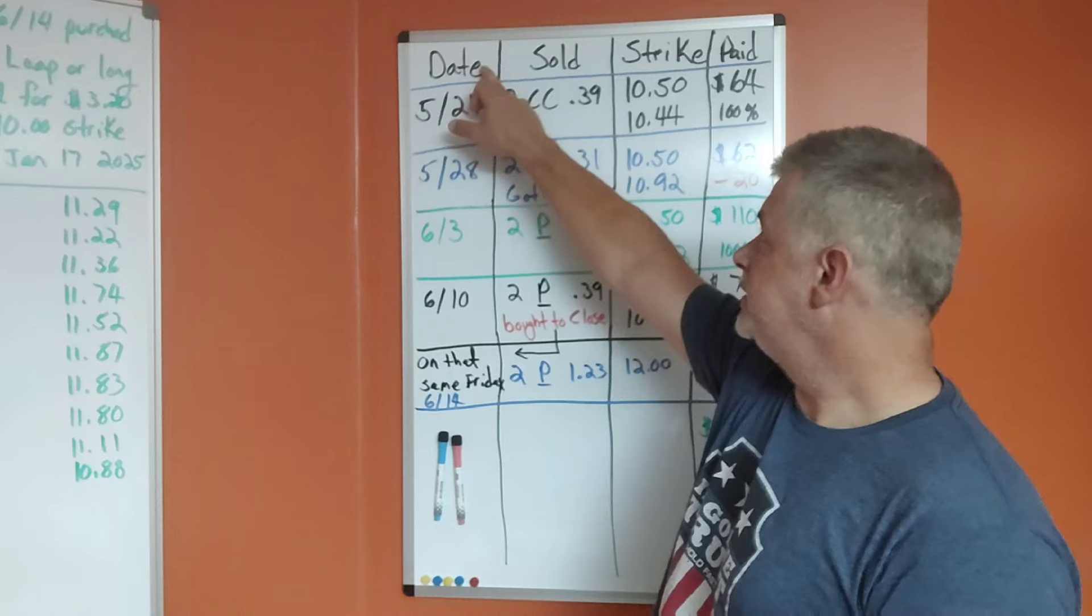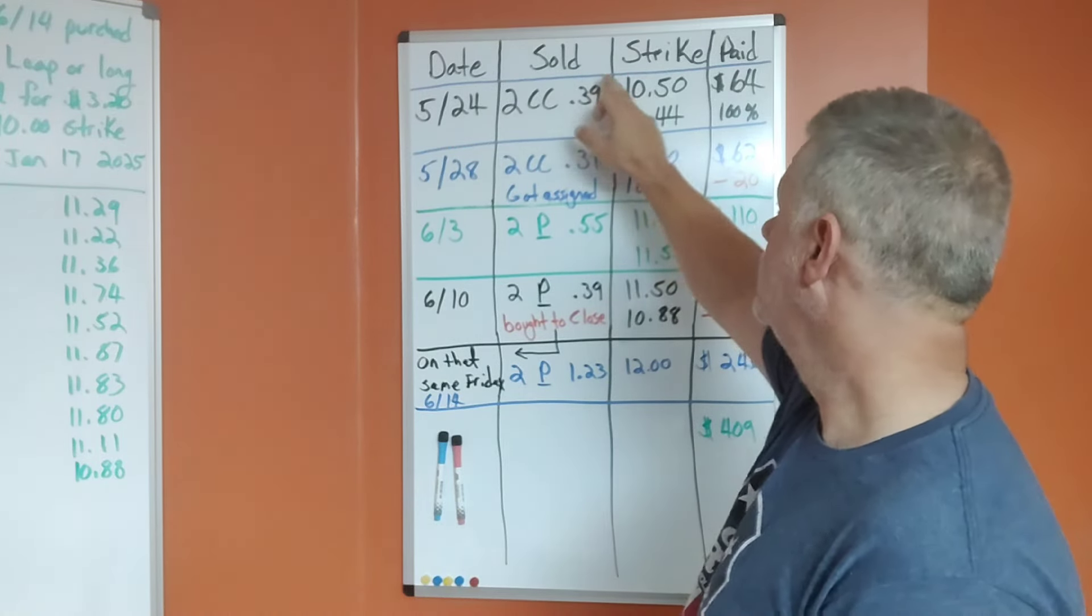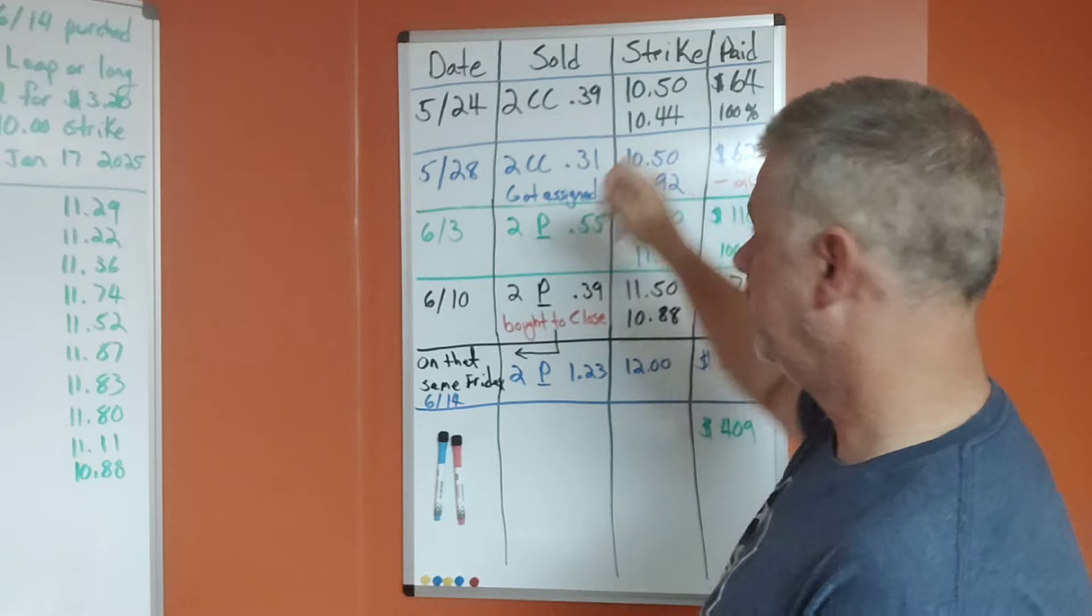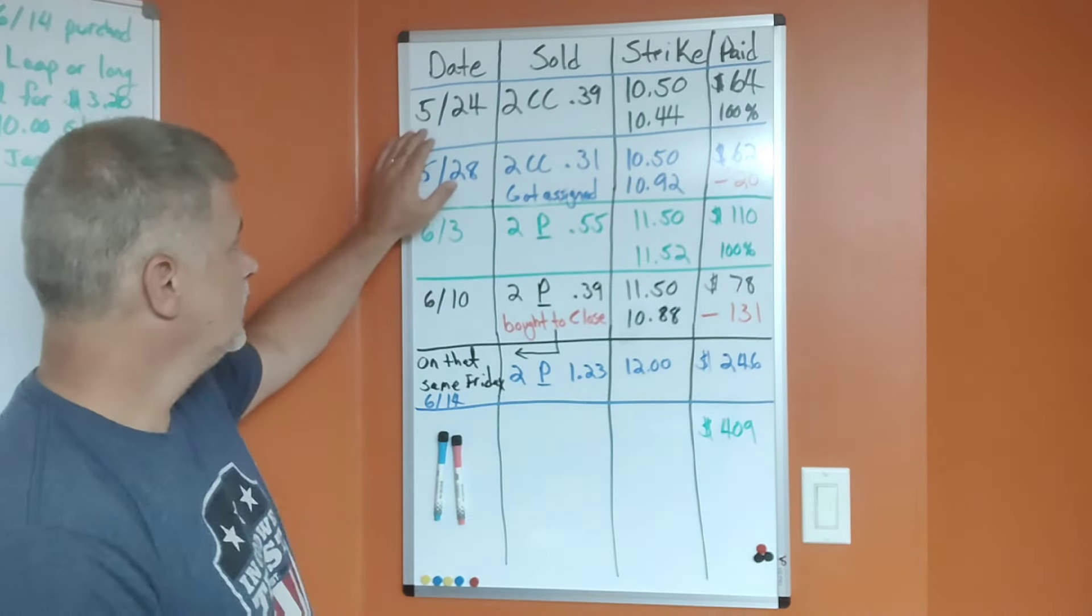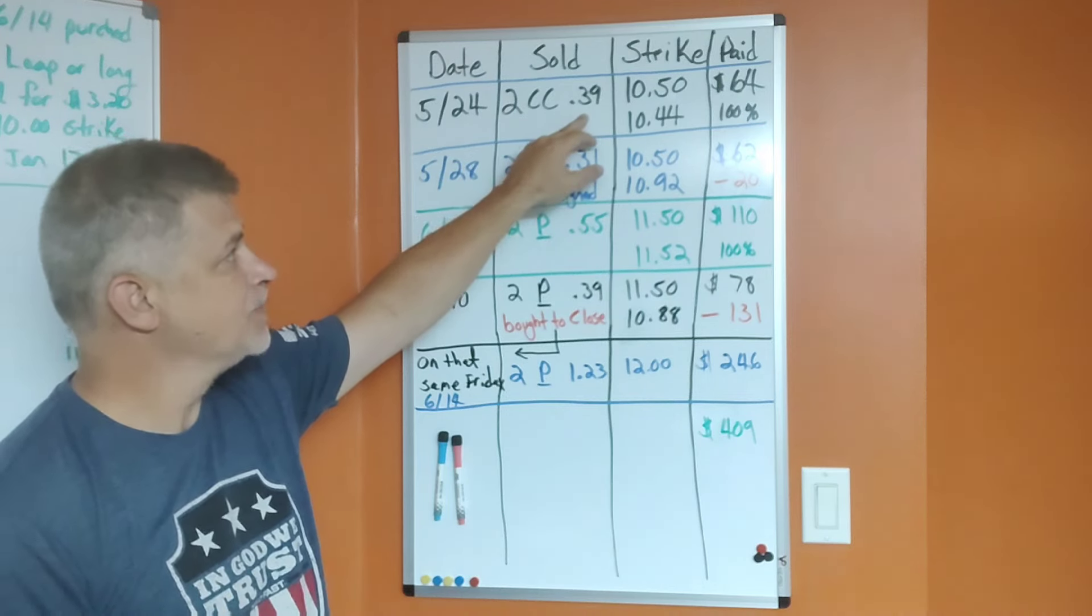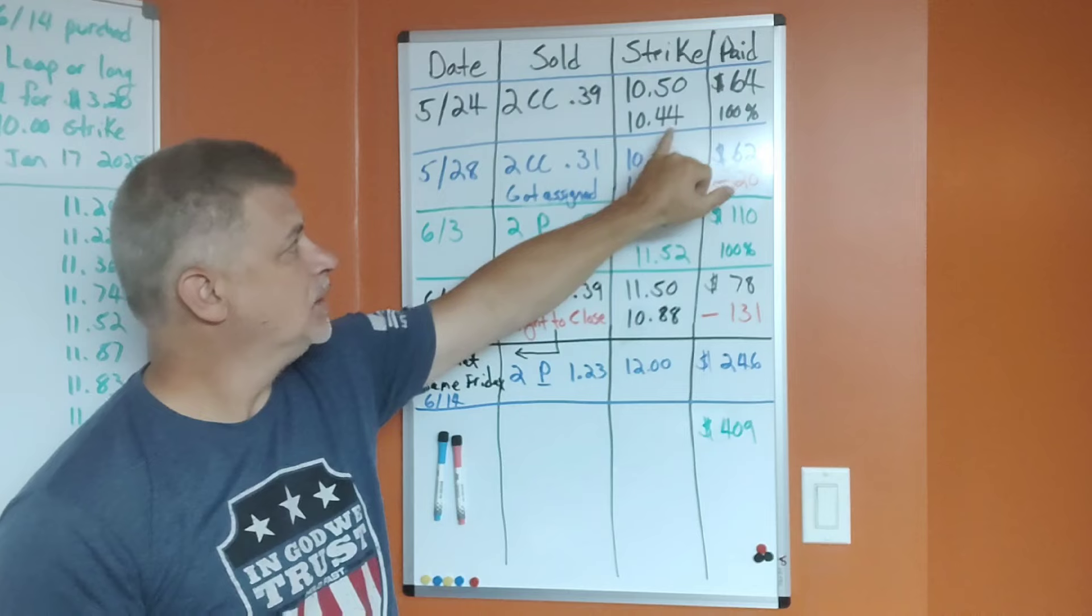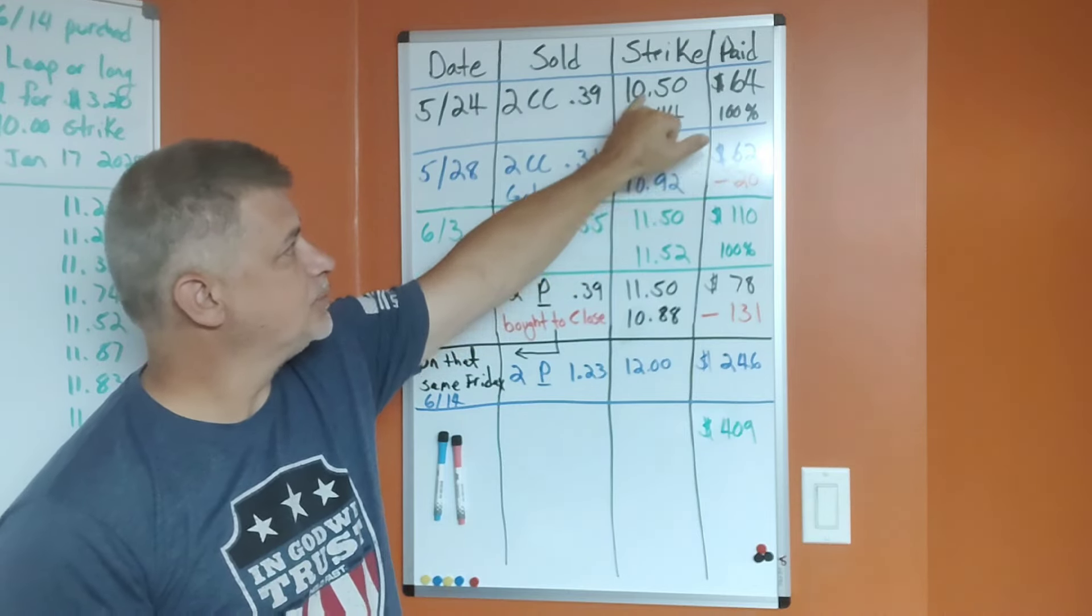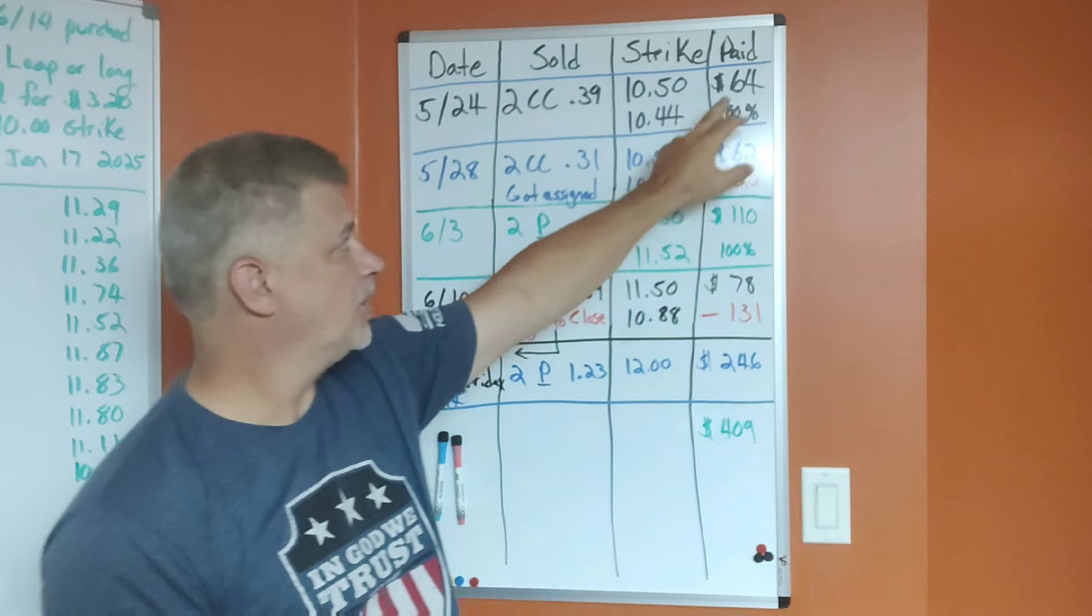What I did, what I sold—I've only been selling, of course—the strike price and what I paid. So I'm just going to walk you through the last couple weeks here. On May 24th, I sold two covered calls for $0.39, and the strike price was $10.50. I got paid $64. It closed at $10.44, which is below the strike price, so I got to keep that premium. I kept 100% of that.